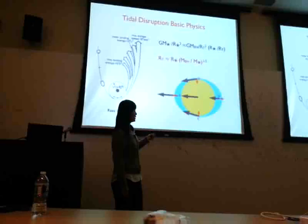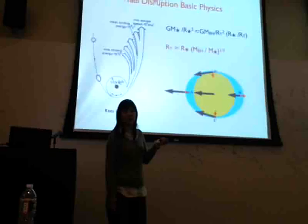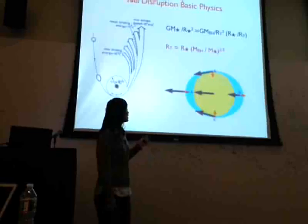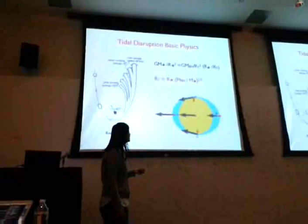The net force on the star is stretching it along the direction connecting the black hole and the star, and in certain transverse directions it is squeezing the star. If the star gets too close and enters the region defined by the tidal disruption radius, the tidal force will be bigger than the self-gravity of the star, so the self-gravity cannot hold the star anymore and the star will be totally disrupted.